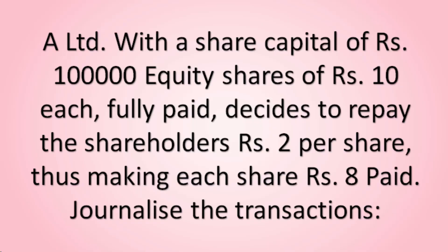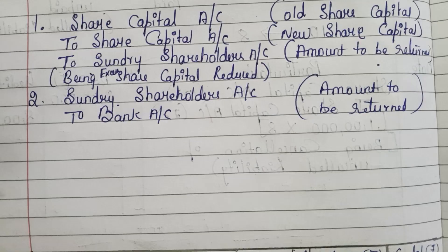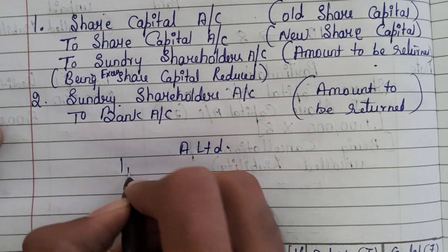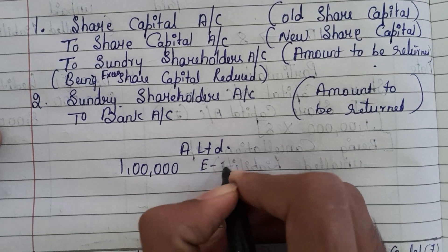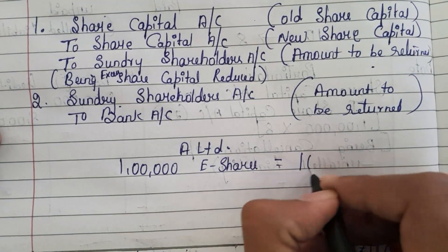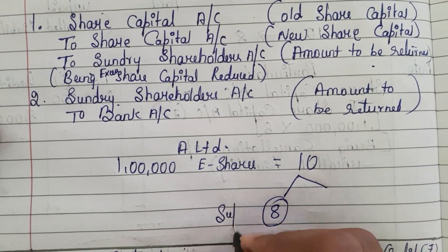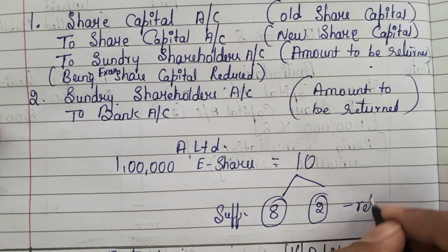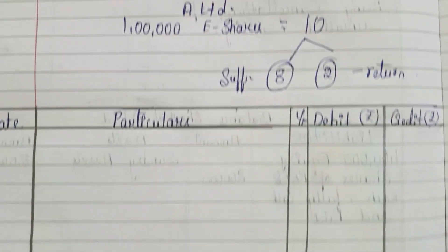Now let us see the question. Kindly take a screenshot of the question. A Limited with a share capital of rupees 1 lakh equity shares of rupees 10 each, fully paid, decides to repay the shareholders rupees 2 per share, thus making each share rupees 8 paid. Journalize the transactions.